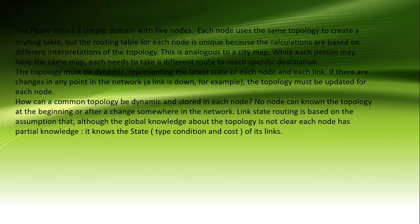The figure shows a simple domain with five nodes. Each node uses the same topology to create a routing table, but the routing table for each node is unique because the calculations are based on different interpretations of the topology. This is analogous to a city map — while each person may have the same map, each needs to take a different route to reach a specific destination.